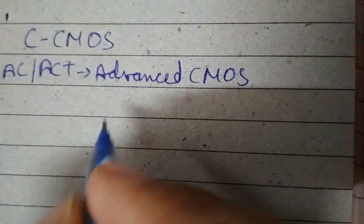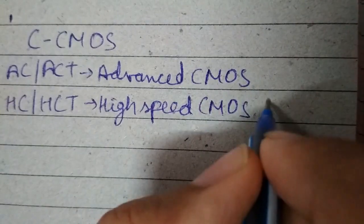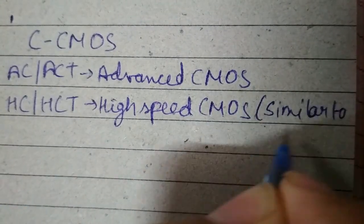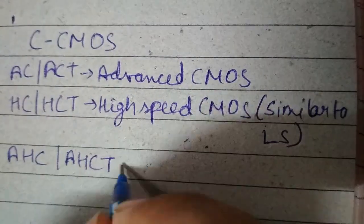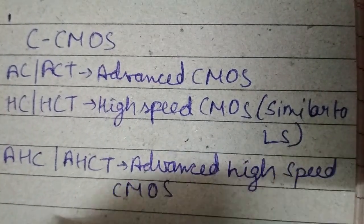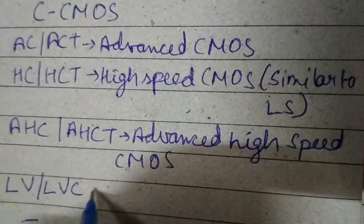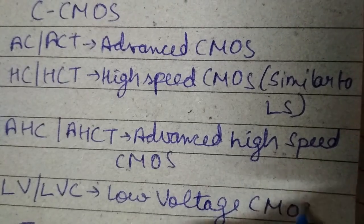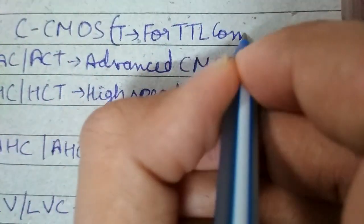AC or ACT represent Advanced CMOS, and HC or HCT represent High Speed CMOS similar to Low Power Schottky. AHC or AHCT represents Advanced High Speed CMOS, and LV or LVC represents Low Voltage CMOS. The additional T suffix indicates TTL-compatible inputs.